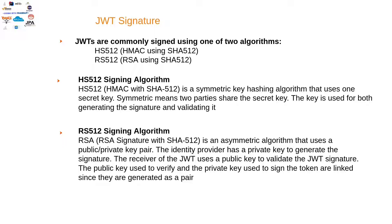The second algorithm is RS512, which is an asymmetric algorithm that uses a public and private key pair. The identity provider has a private key to generate the signature, and the receiver uses the public key to validate it. The public and private keys are linked since they are generated as a pair, so no one can modify a generated JWT.